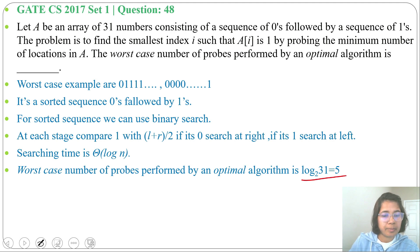So answer will be 5. Worst case number of probes performed by optimal algorithm is 5. Maximum 5 times we will check.